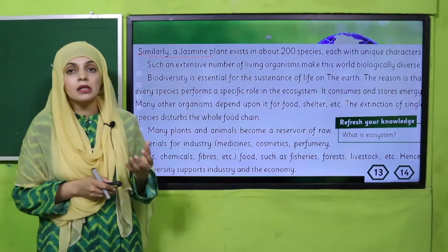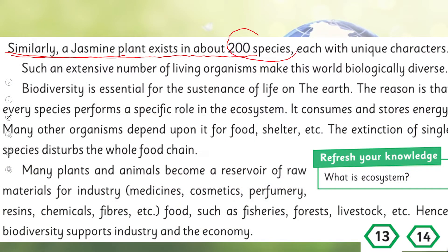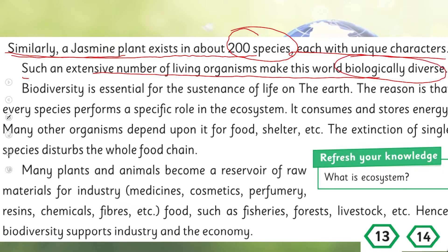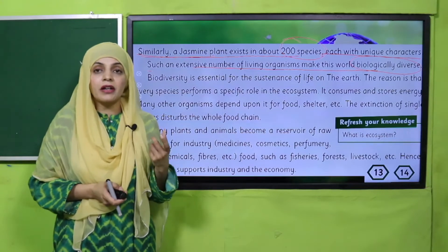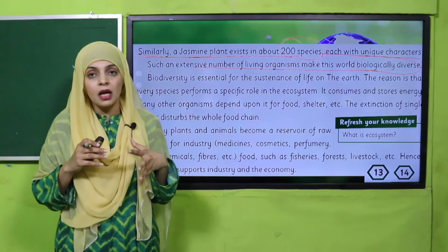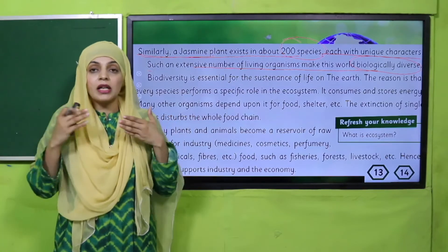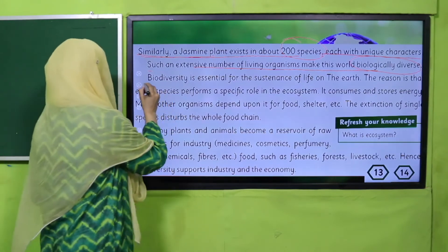Similarly, the jasmine plant exists in about 200 species, each with unique characters. Such an extensive number of living organisms makes this world biologically diverse. The jasmine flower exists in 200 different varieties — some have different colors, different fragrances, different internal structures, different habitats. Within one species there is so much variety, and because of this variety, this world is biologically diverse.